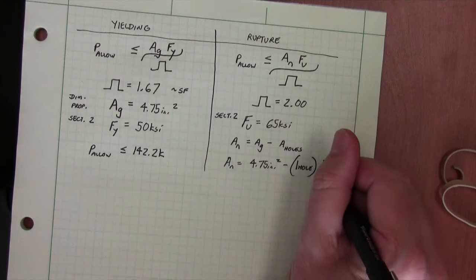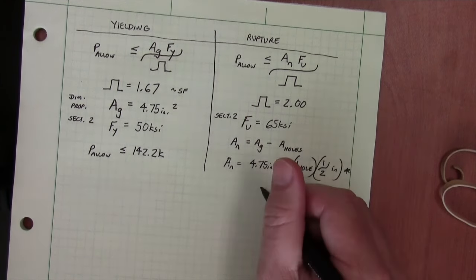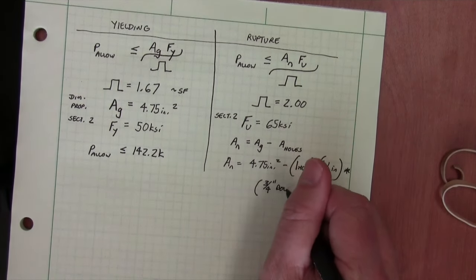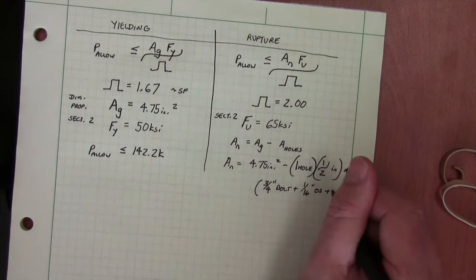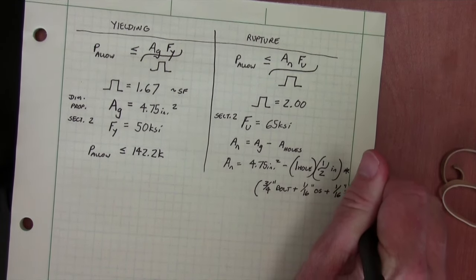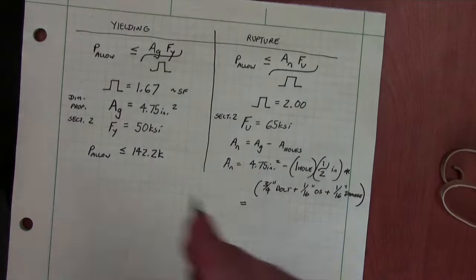And so if we start to look at this, we have one hole affected in our picture. It's a half inch thick angle. We have three quarter inch bolts plus a sixteenth inch oversize and a sixteenth inch of damage area when we punch or drill the holes.